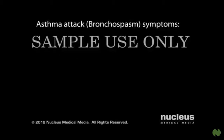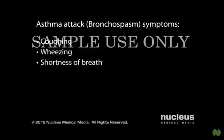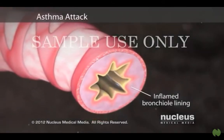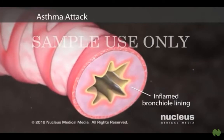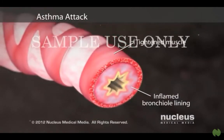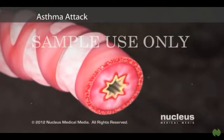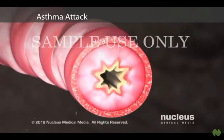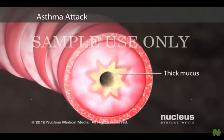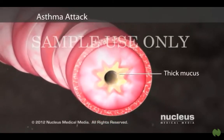The symptoms of an asthma attack include coughing, wheezing, shortness of breath, and tightness in your chest. During an asthma attack, also known as a bronchospasm, the muscles around your airways tighten and the airway wall becomes more swollen. Your airways also produce thick mucus that narrows them even more, making it hard for you to breathe.